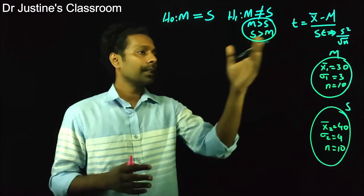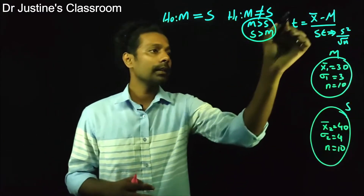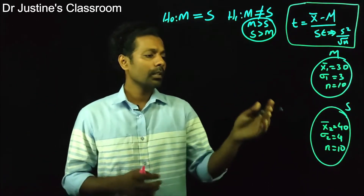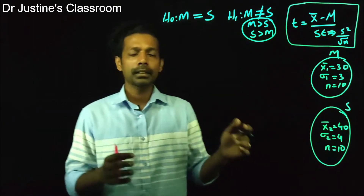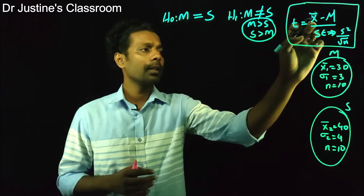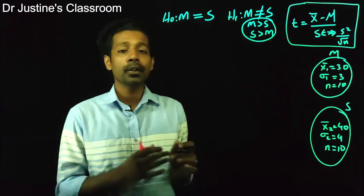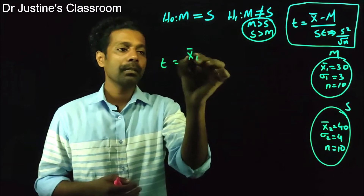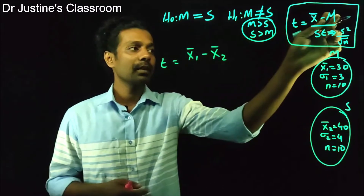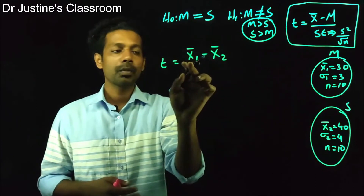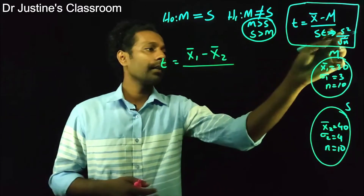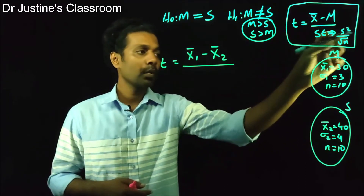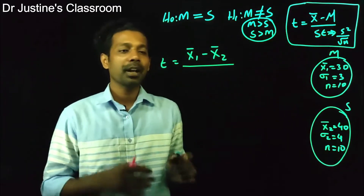Now, how do we calculate the t-value for an independent sample t-test? In this context, instead of sample mean minus population mean, the numerator becomes group one mean minus group two mean. For the denominator, instead of a single standard deviation squared over n, we now have two samples, so we use a pooled standard error.